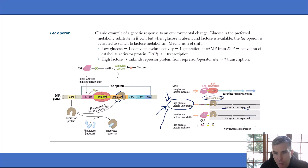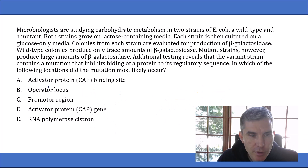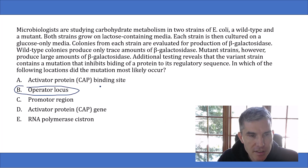Therefore, the mutation must be in the operator site. There's some mutation there such that the repressor protein does not bind, and you still get transcription of the genes even though you should not. Going back to the question, choice B — the operator locus — is the answer.